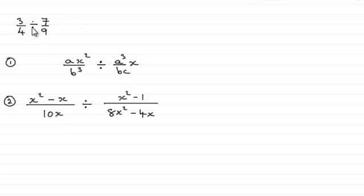We've got here three quarters divided by seven ninths, and it's quite likely that you've been taught in the past that this is equal to the first fraction three quarters. What we do is we turn the division sign to a multiplication sign and take the last fraction and turn it upside down.